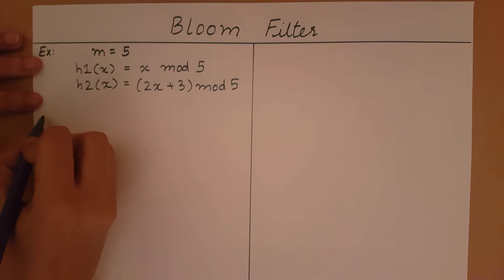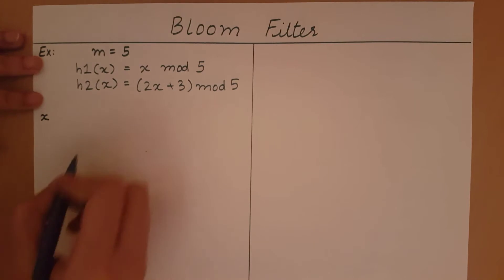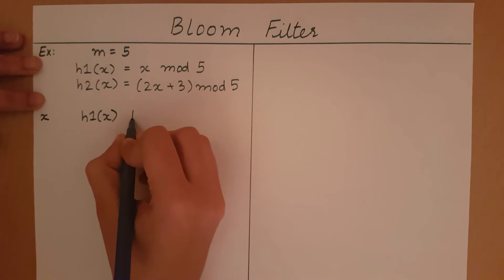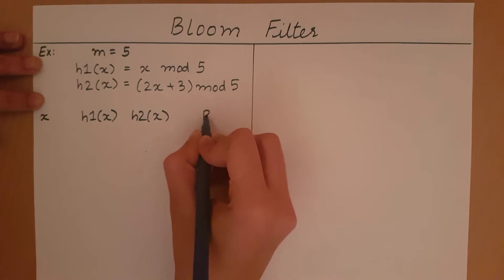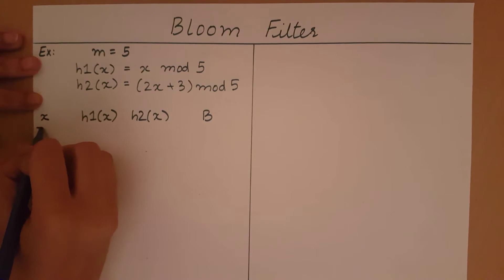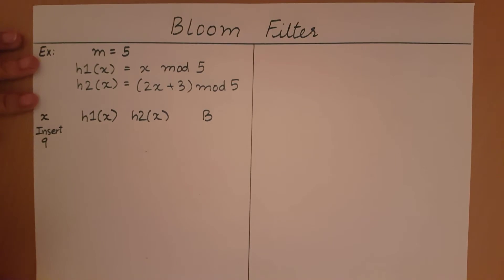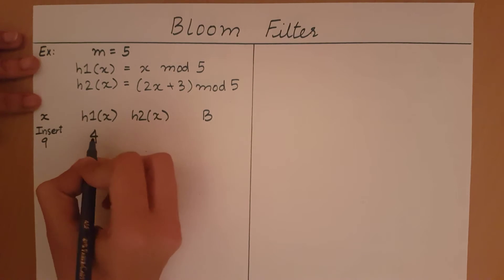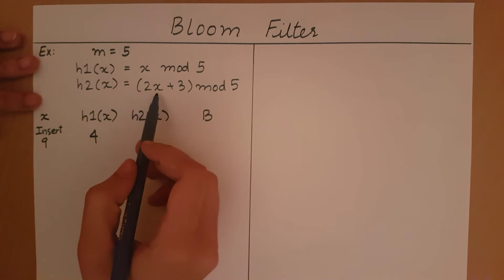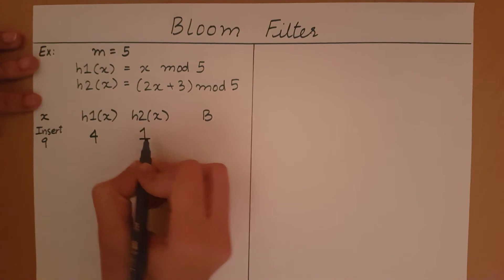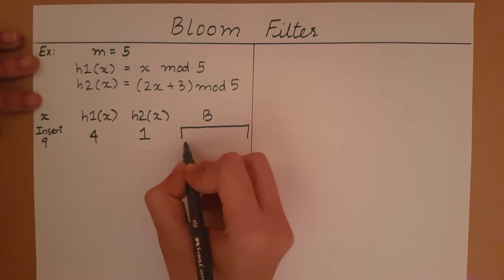The first element we are going to insert is 9. hash1(9) = 9 mod 5 = 4. hash2(9) = (2×9 + 3) mod 5 = 21 mod 5 = 1. So the hash values for element 9 are 4 and 1.